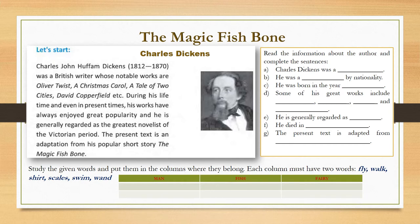He is a great writer in the English Victorian period. The present text is an adaptation from his popular short story, The Magic Fishbone — this is an adapted or edited form of the original story.